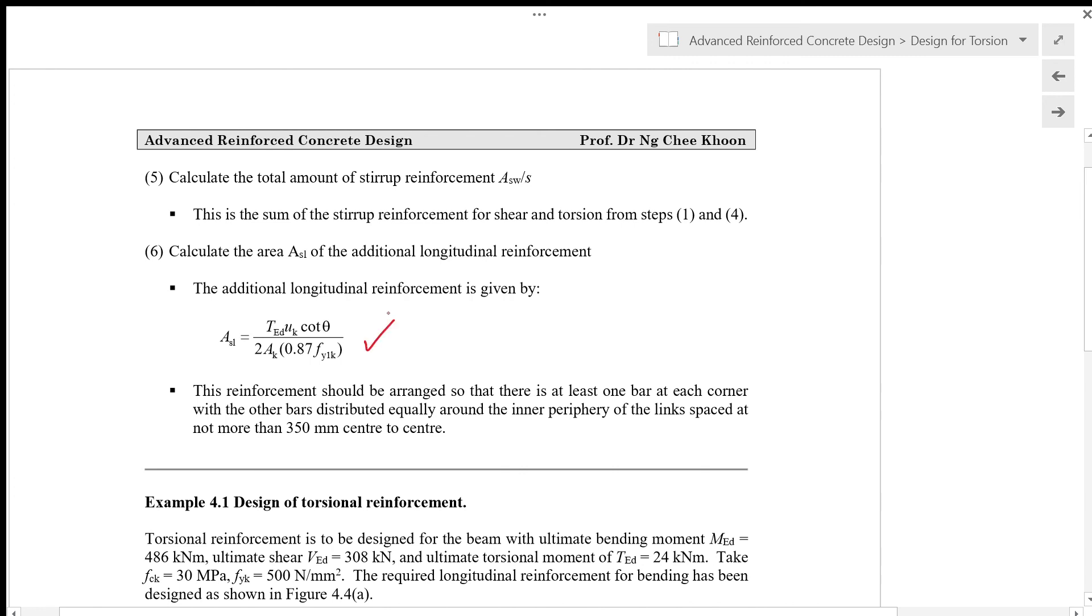This reinforcement should be arranged so that there is at least one bar at each corner with the other bars distributed equally around the inner periphery of the links spaced at not more than 350 mm center to center.